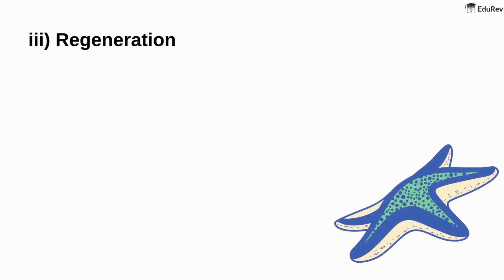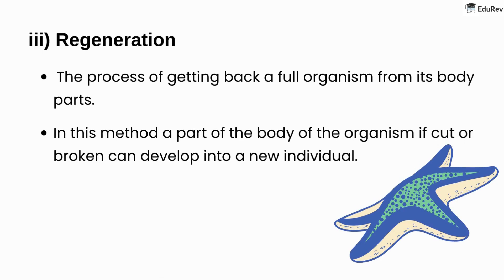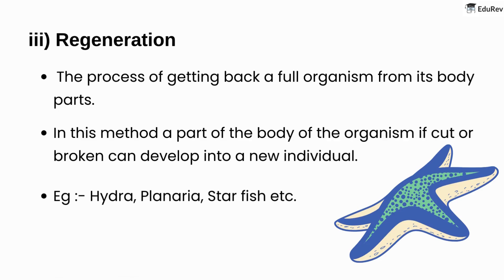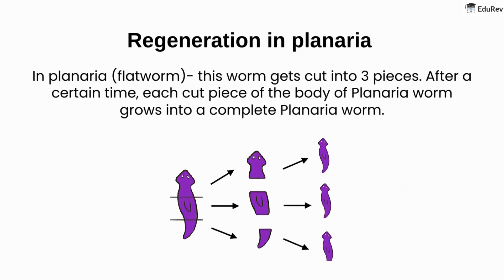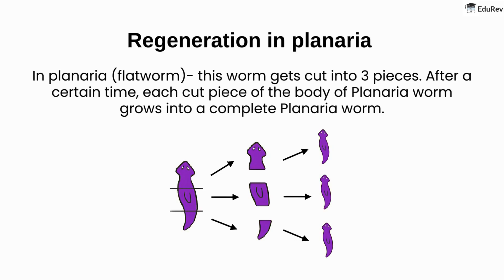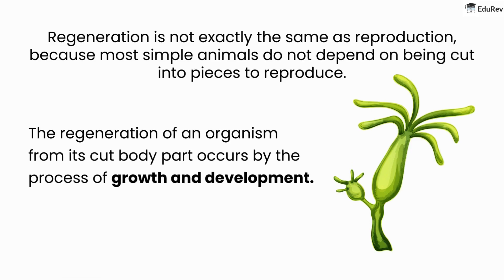Regeneration is the process of getting back a full organism from its body parts. In this method, a part of the body of the organism, if cut or broken, can develop into a new individual. Examples include hydra, planaria, starfish, etc. In planaria, a flatworm, the worm gets cut into three pieces. After a certain time, each cut piece grows into a complete planaria worm. Regeneration is not exactly the same as reproduction because most simple animals do not depend on being cut into pieces to reproduce. The regeneration of an organism from its cut body part occurs by the process of growth and development.